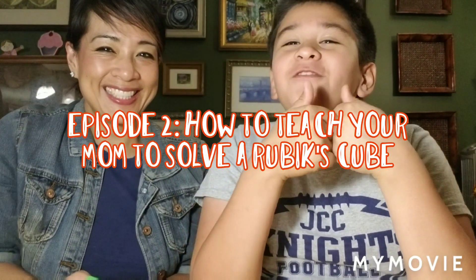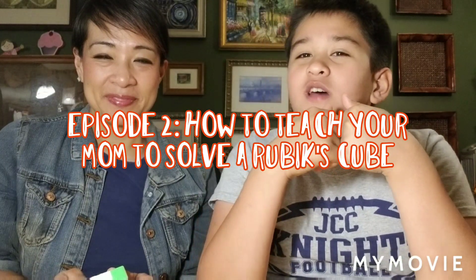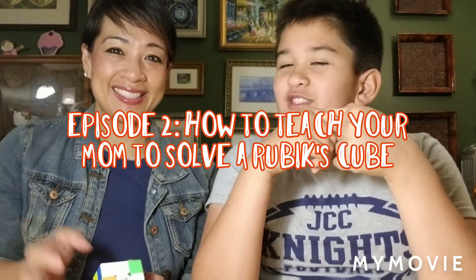Hey guys, it's the Flash Cubing. This is my second episode on how to teach your mom to solve a Rubik's Cube. Hi. So back in the previous video, we defined the pieces and what they do in notation. And what are we going to do now? We're going to solve the white cross, the white layer, and F2L. Really? All the way to F2L? Yeah. You think we're going to get that far? Yeah. Okay, let's get started.